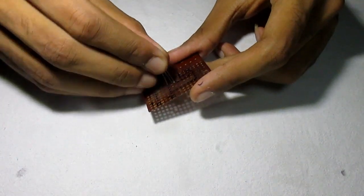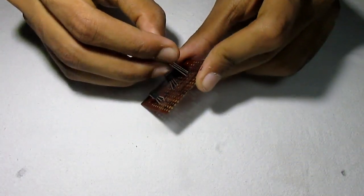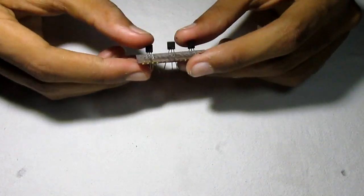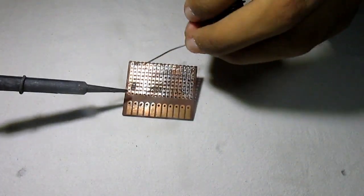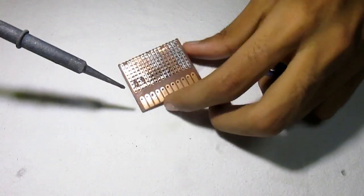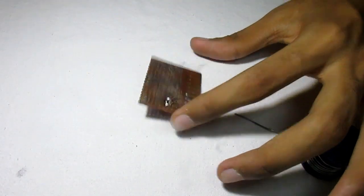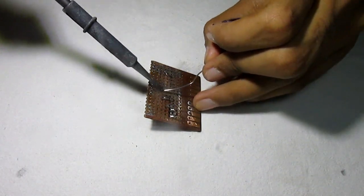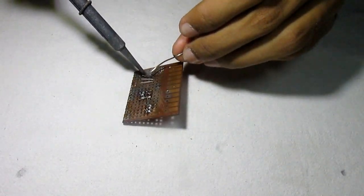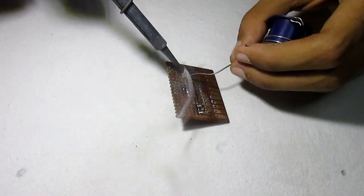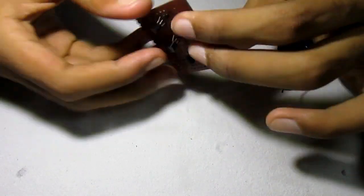Place the UM66 IC in the PCB following the diagram. Next, place the 548 transistors in the same manner. Now let's solder them onto the board. So your circuit should look something like this now.